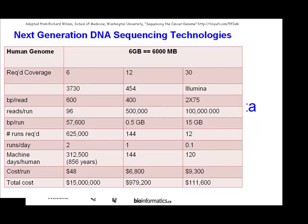How many runs can you do per day? On Sanger you can do about two to three per day. On 454 a run takes 10 to 12 hours, so about one a day. On Illumina it takes about 10 days for a full run, so 0.1 runs per day. Machine-days per human genome would be 312,000 days — about 850 years — on Sanger. On 454 it would be 144 days; on Illumina, 120 days. So if a place has 10 to 12 Illumina machines, it would take them a week or two. Cost per run is about $40 for Sanger, but for a whole human genome today that's about $15 million. On 454 it would be about a million dollars, and on Illumina about $100,000.